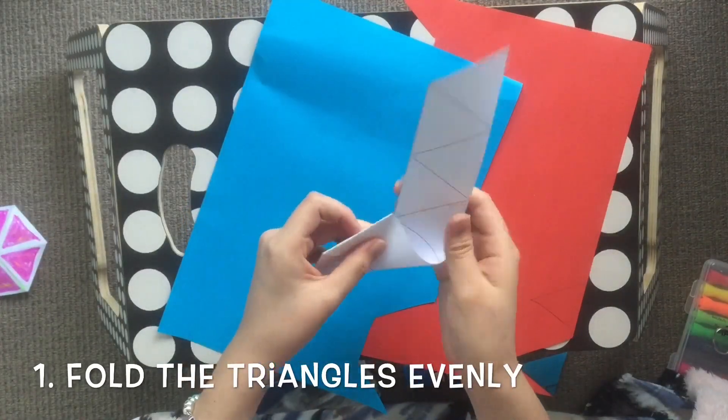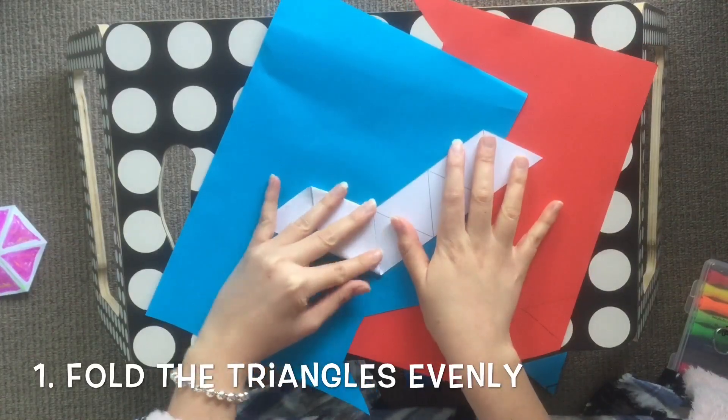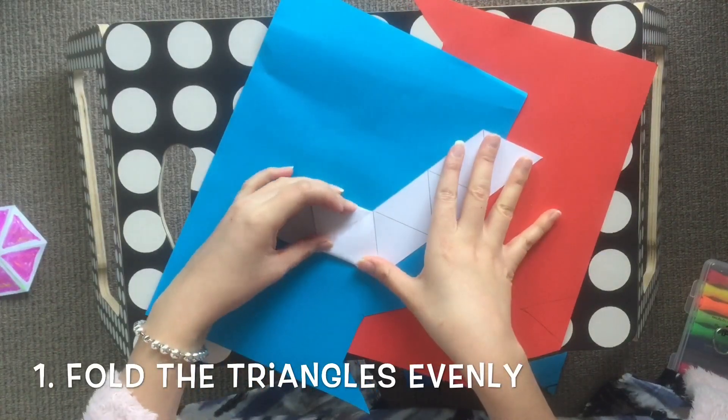First, we need to fold the triangles so that they're equilateral. This will ensure that the overall piece will fit together.